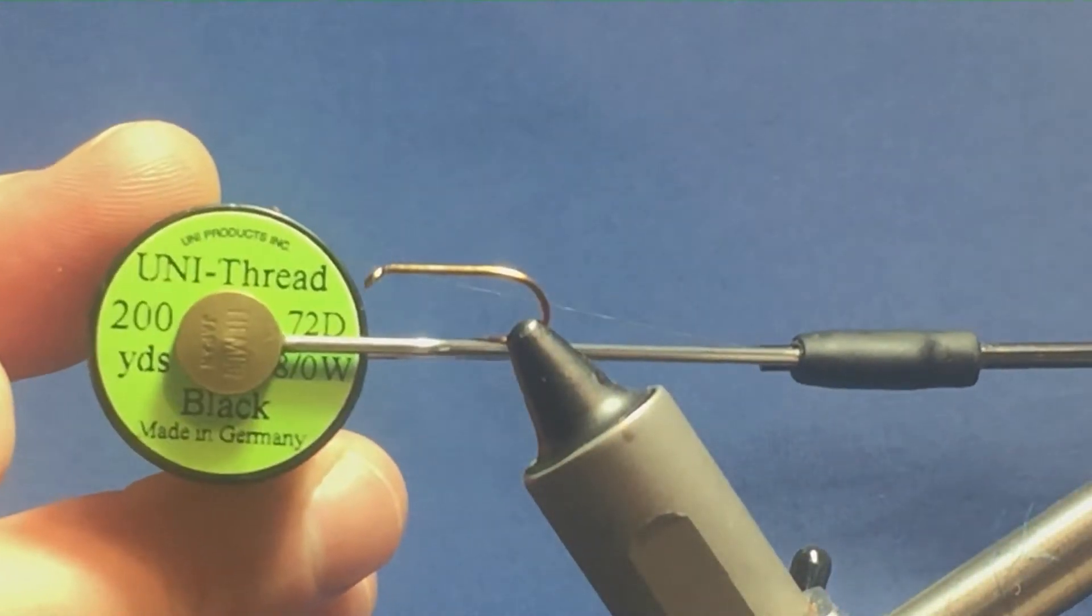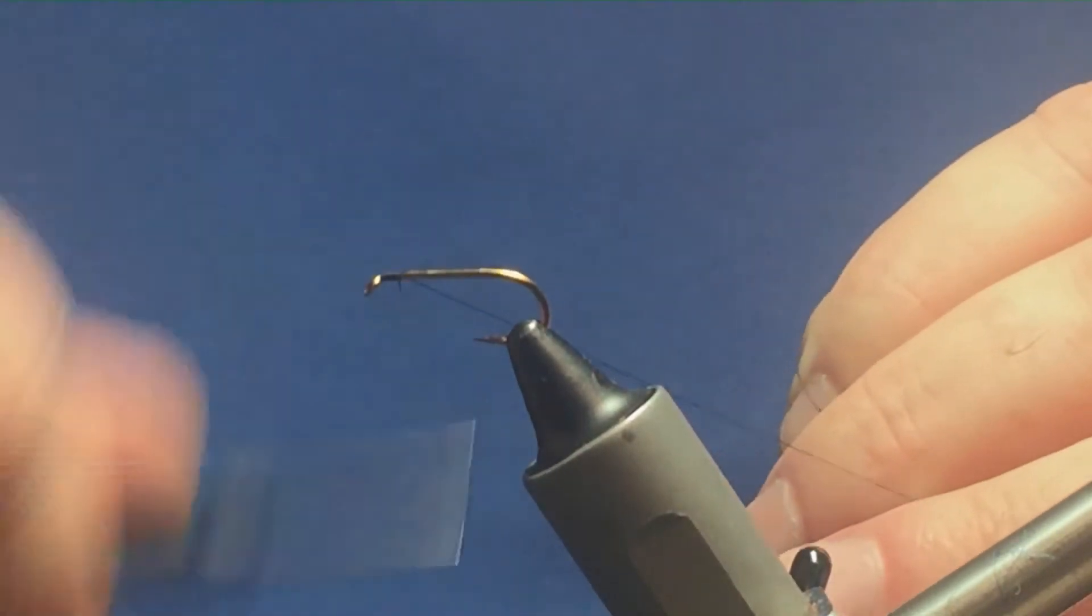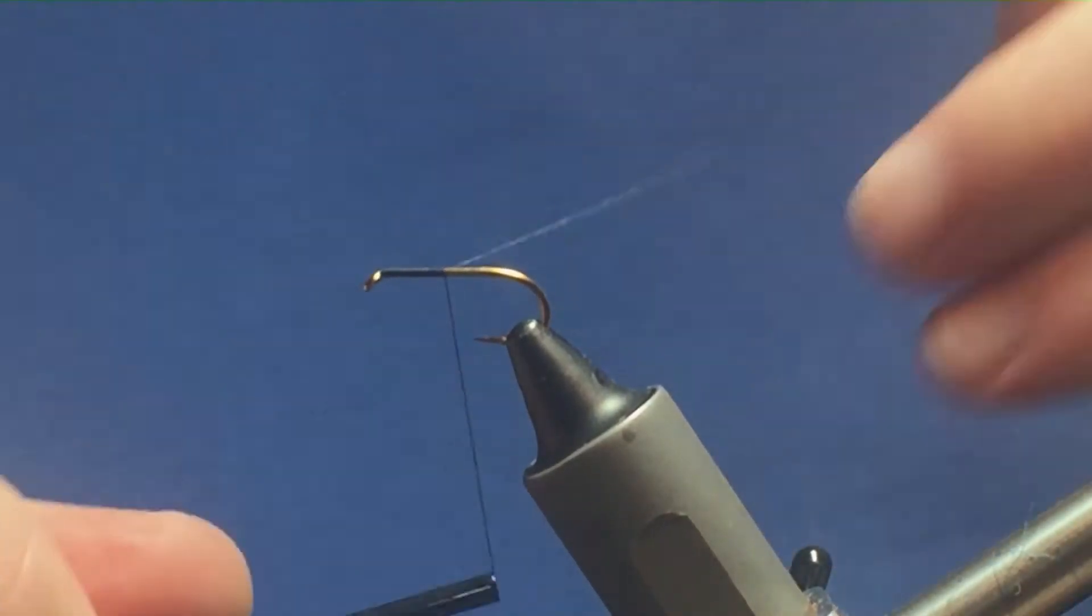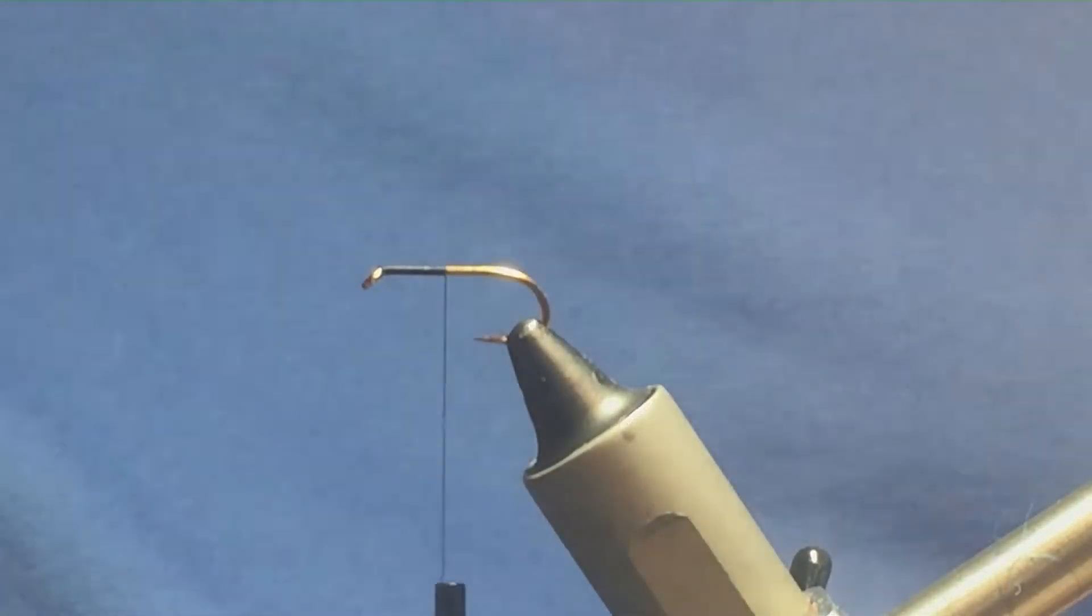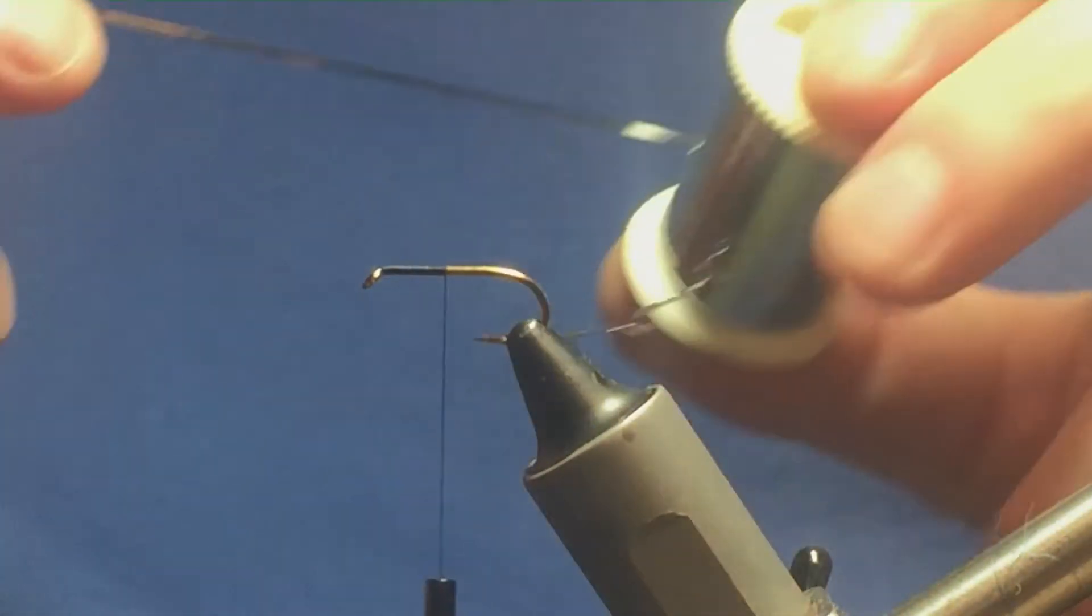I'll just come in and get the thread started behind the eye of the hook. Go on a few turns and simply remove the waste tag of the thread. Now the rib on the fly is going to be a small